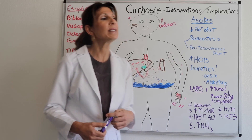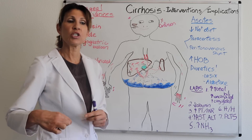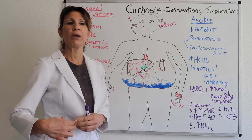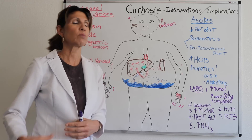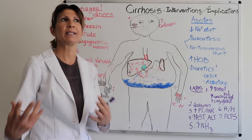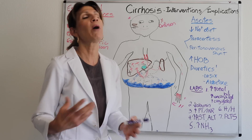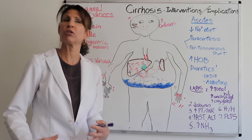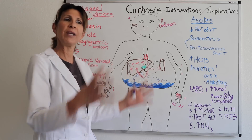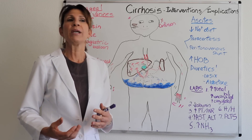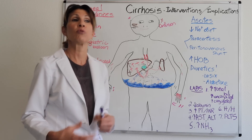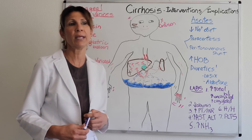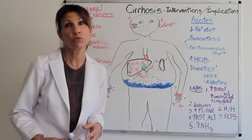A paracentesis enables a practitioner to insert a needle — guided by ultrasound — into the peritoneal space and remove that protein-rich fluid. However, you're removing albumin, electrolytes, and fluid that were part of the patient's system. Monitor for cardiovascular compromise, drops in blood pressure from the fluid shift, hemodynamic instability, and document the amount removed.